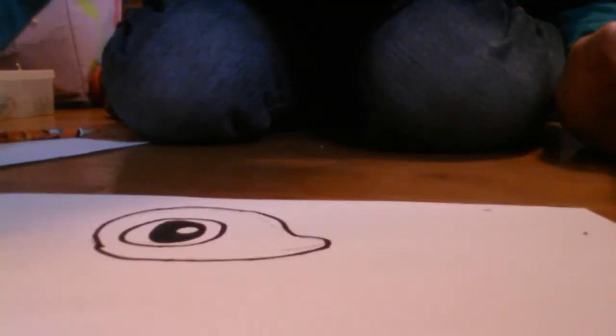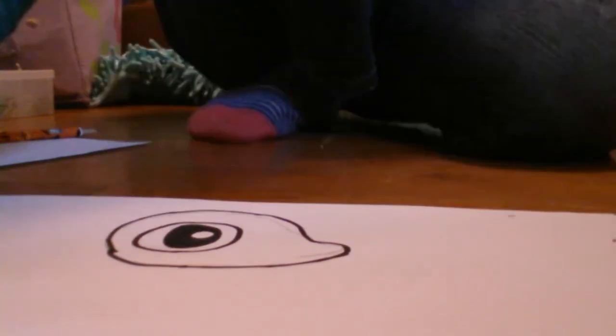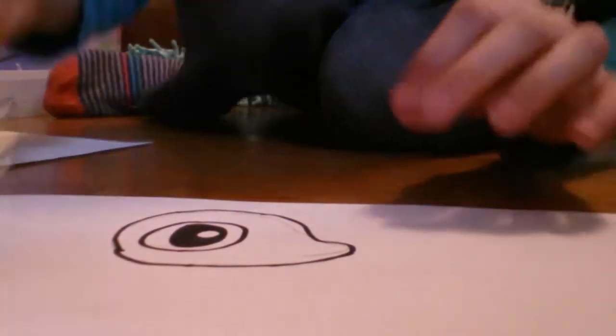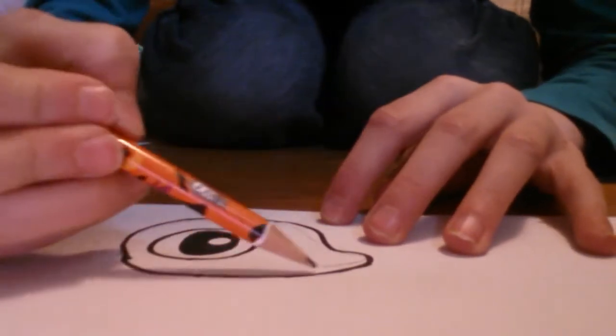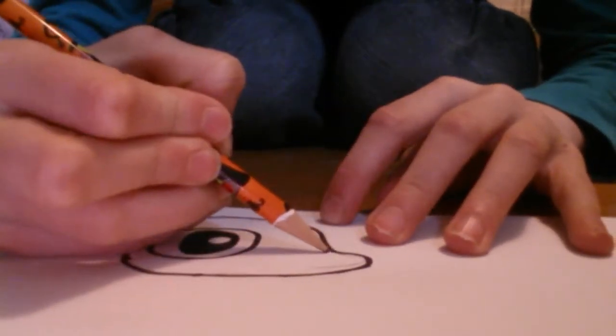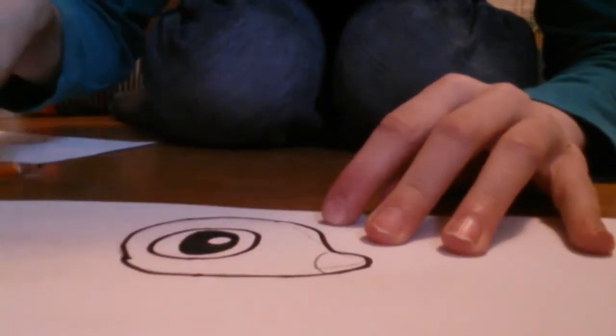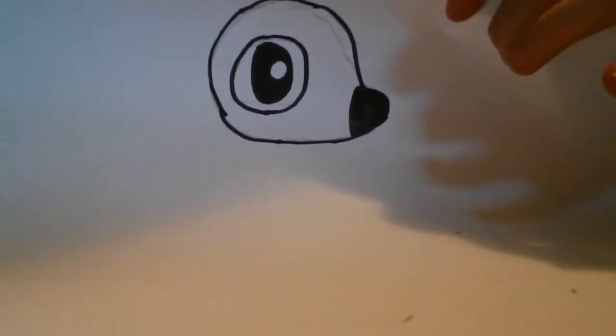Your drawing should look like this so far. Now make the nose. It's really simple. A curve should be here. Just draw like that. Then color it in. Great!